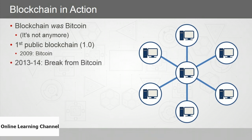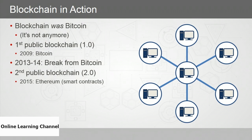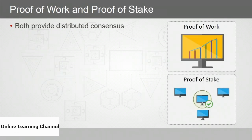But things began to change. Between 2013 and 2014, there was a break from Bitcoin — people began to realize blockchain could be used for so much more than cryptocurrency. The second public blockchain was Ethereum in 2015, known for smart contracts, though it also has a cryptocurrency. The third era unfolded with organizations everywhere building their own solutions. Blockchain adds transactions to the chain by processing problems, and once solved by at least 51% of the network, blocks are added — this is called distributed consensus.